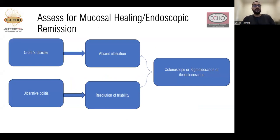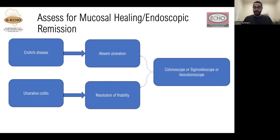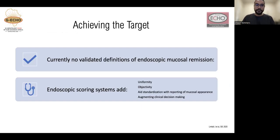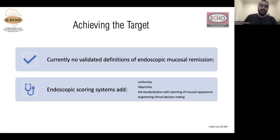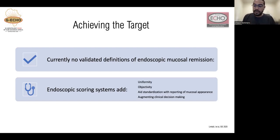STRIDE 2 put forward targets for patients with IBD broken into short-term, intermediate, and long-term targets. Endoscopy is used in both short and intermediate targets, but its emphasis is in long-term targets — endoscopic healing with normalization of quality of life, and possibly histological healing. In Crohn's disease, you want absence of ulceration; in ulcerative colitis, resolution of friability. The tools are colonoscopy, sigmoidoscopy, or ileocolonoscopy. Endoscopic scoring systems add uniformity in reporting, objectivity in assessing the mucosa, and standardization, augmenting clinical decision making.